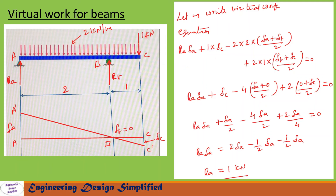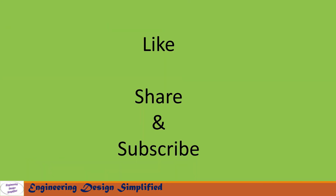Now let us write the virtual work equation: R_A × delta-A plus 1 × delta-C, minus the UDL between A and B: 2 × 2 × (delta-A + delta-B)/2, minus the UDL between B and C: 2 × 1 × (delta-B + delta-C)/2 equals zero. Substituting delta-C and simplifying, we get reaction at A, R_A = 1 kN. That's all for today's video — if you like this content, please like, share, and subscribe. Thanks for watching.